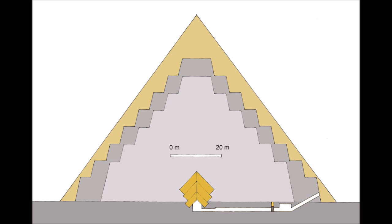Neferirkare's pyramid deviated from convention as it was originally built as a step pyramid, a design that had been antiquated after the 3rd dynasty, 26th or 27th century BC. This was then encased in a second step pyramid with alterations intended to convert it into a true pyramid. However, the pharaoh's death left the work to be completed by his successors.